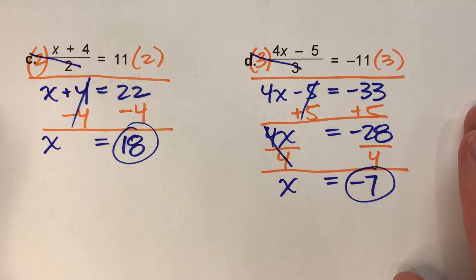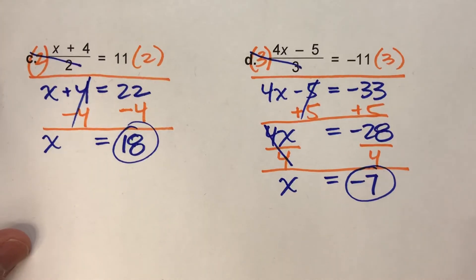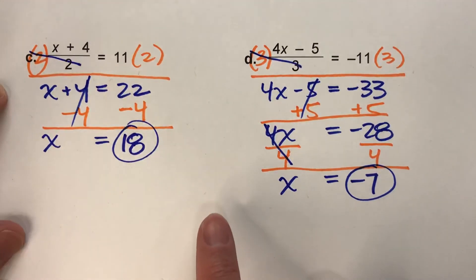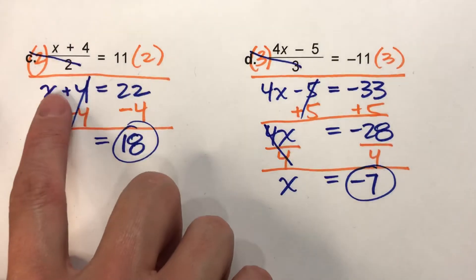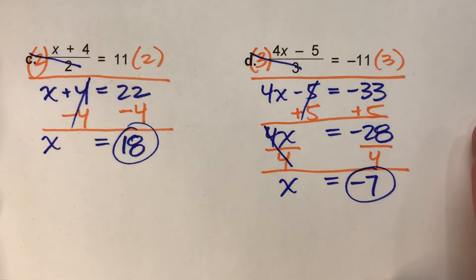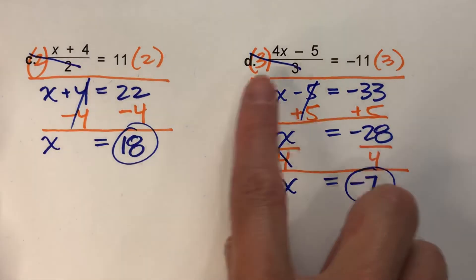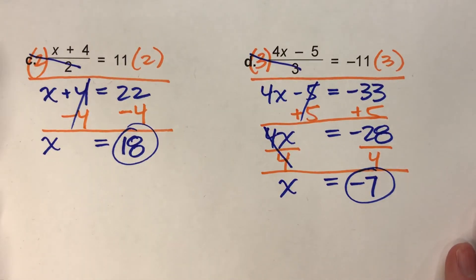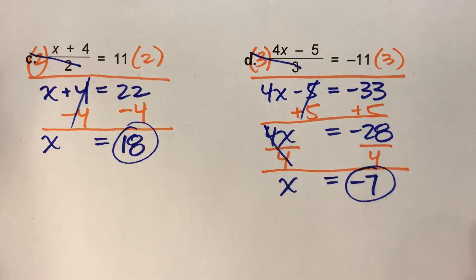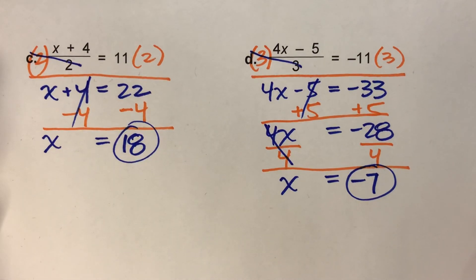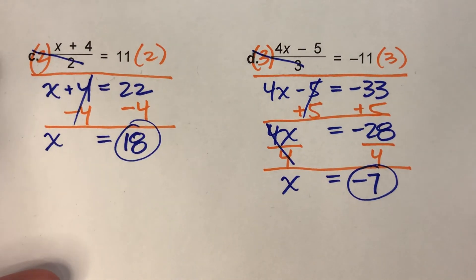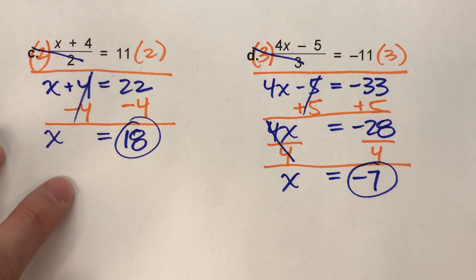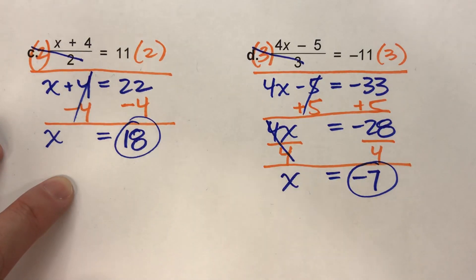The key to doing this really is two things: one, making sure you're undoing the problem in the exact opposite order of the order of operations, and then what you do to one side, you do to the other. By showing your work, it's really easy to keep track of what you're doing, and it's also easy to check your answer on a calculator or using mental math. Hopefully you found this video helpful — please hit that like button and subscribe, because it really helps us out. Good luck on your math, and I'll see you next time.